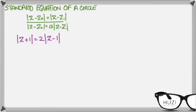Okay, so when you see something like this, z minus z0 equals z minus z1, both in a modulus, we know that this is a perpendicular bisector loci.